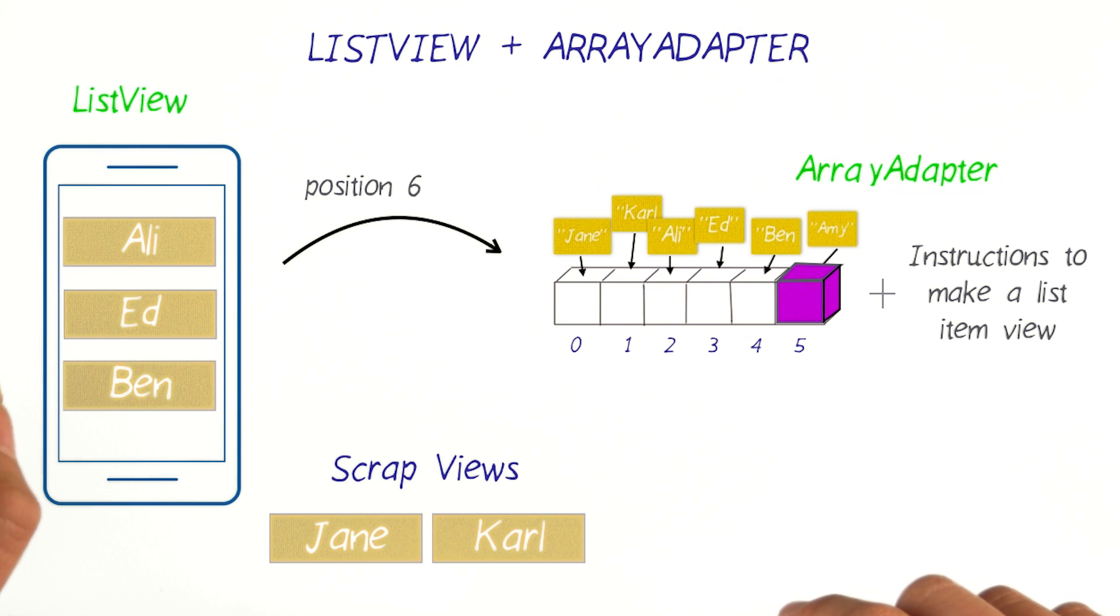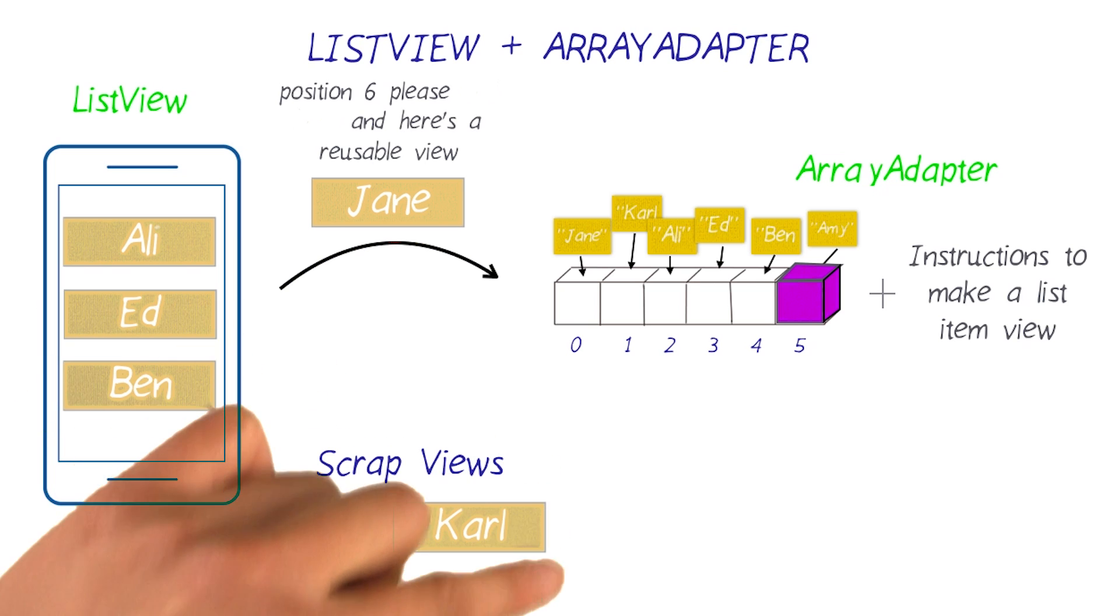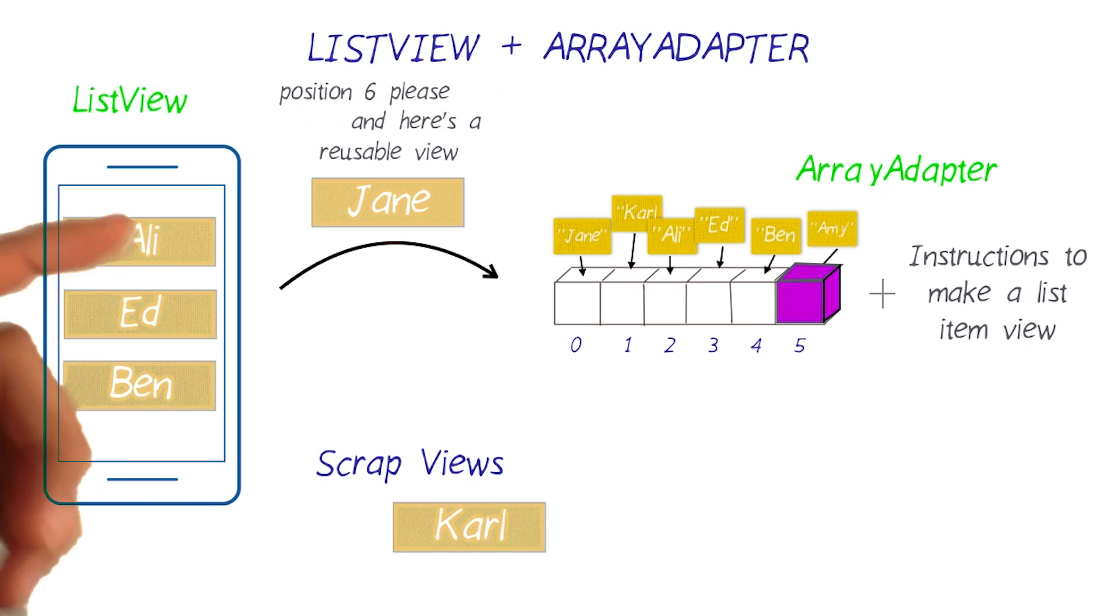In this specific example, Jane and Carl, the first two list items, are no longer visible and end up in the scrap pile. We can actually reuse those views by passing them back to the array adapter when we request a new list item.